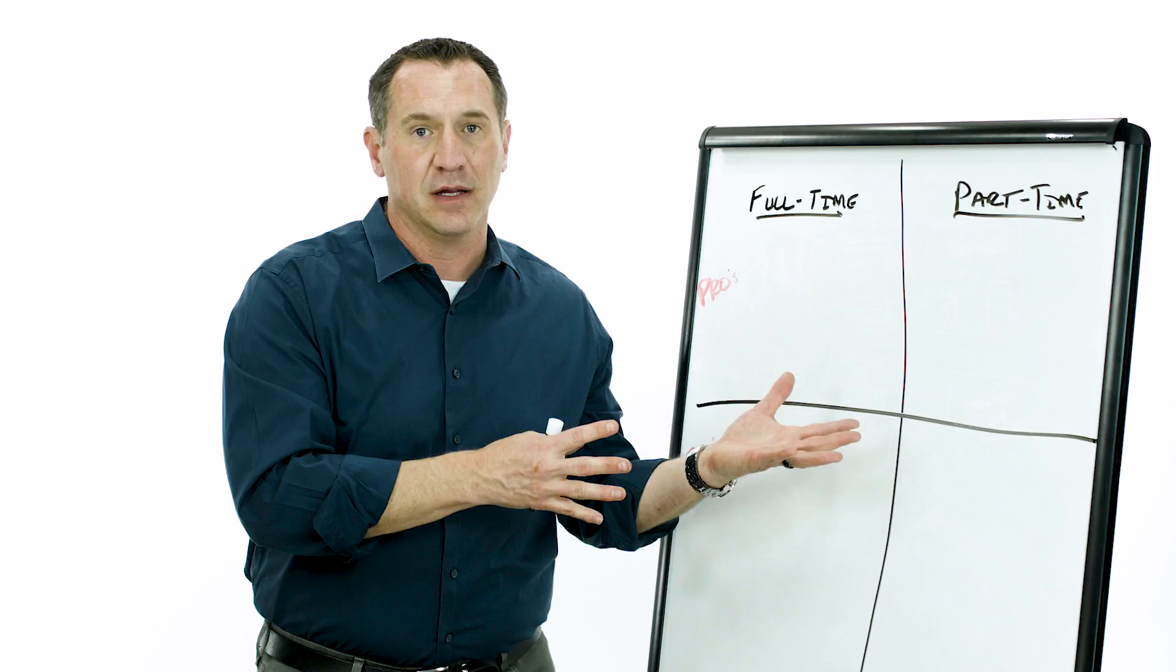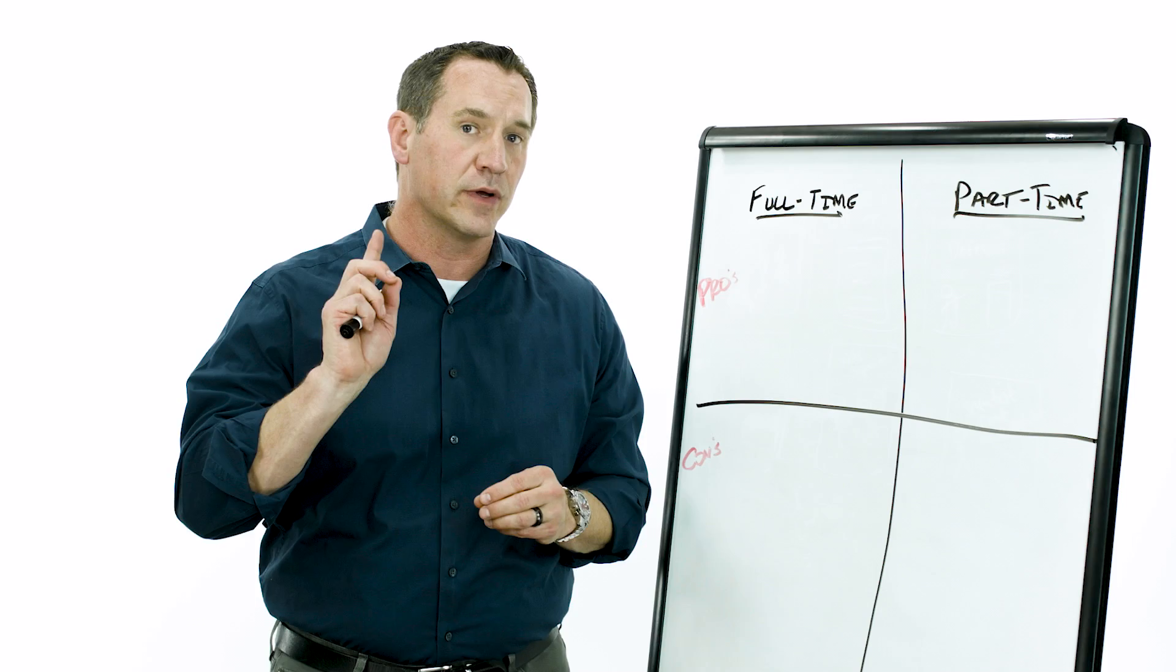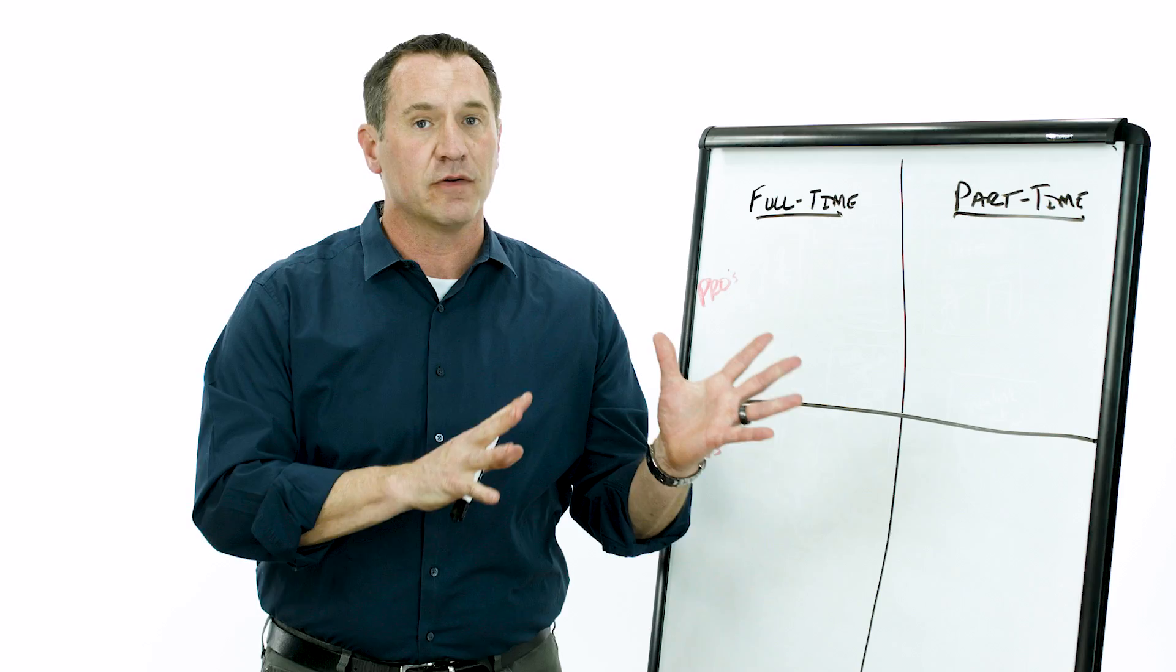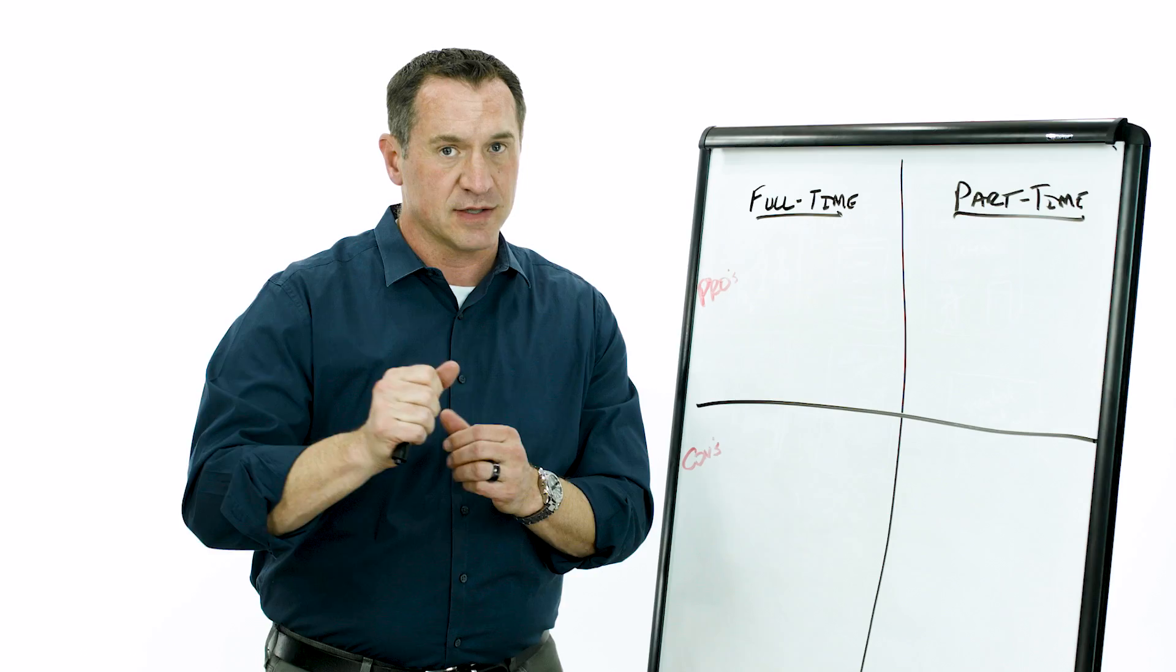Also, you cannot use the HELOC or a home equity line to buy an RV and think you can write off the mortgage interest. Under the Tax Cuts and Jobs Act, you can only write off the interest on your acquisition indebtedness for your primary residence. I've got other videos on the Tax Cuts and Jobs Act - watch them, learn it. But that's the bad news. I've still got some good news.